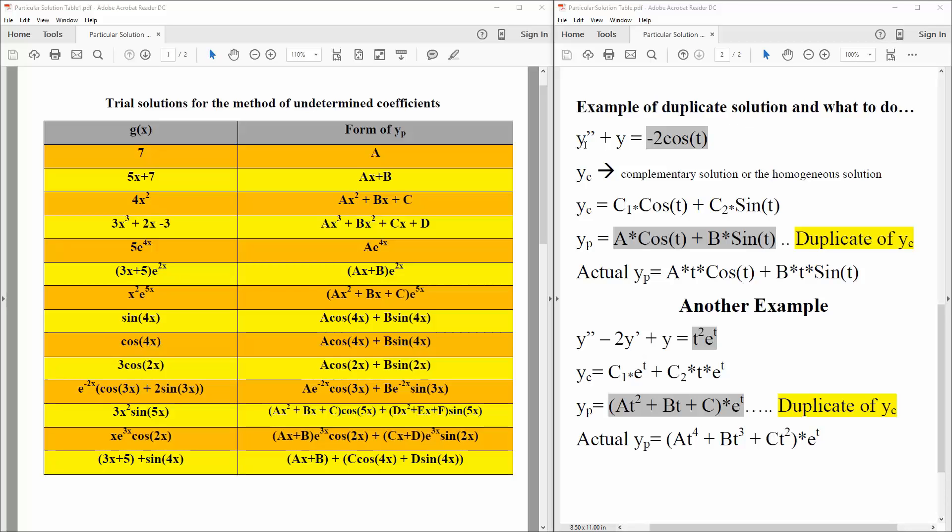So let's say we have y double prime plus y is equal to negative 2 cosine t. Our y_c, our complementary solution, or our homogenous solution would be c1 times cosine t plus c2 times sine t. We're getting that by doing like r squared plus r is equal to 0. That's how we got this. Now, based off of this table, we would say that y_p is equal to a cosine t plus b sine t.